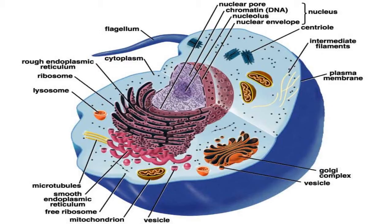Microtubules: these straight hollow cylinders are found throughout the cytoplasm of all eukaryotic cells — prokaryotes don't have them — and carry out a variety of functions ranging from transport to structural support.